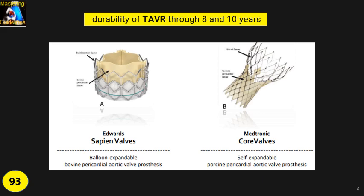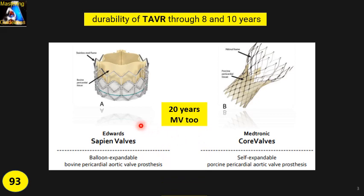Generally speaking, TAVR valves have two parts: one frame and one valve. In the Sapien group they use cow pericardium, and in the CoreValve they usually use pig pericardium. TAVR has been around for almost more than 20 years. In the last five to ten years they started doing a similar technique for the mitral valve, called TMVR, but it is still not established and needs more work.